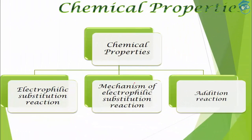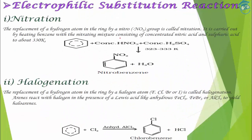The para isomer has the highest symmetry — that is the reason for its highest melting point. Let's continue with the chemical properties of benzene. We will study electrophilic substitution reactions, their mechanism, and addition reactions. Electrophilic means there will be an attack by an electrophile — that is an electron-loving species — and in substitution the attacking group attacks and something leaves, which in this case is hydrogen.